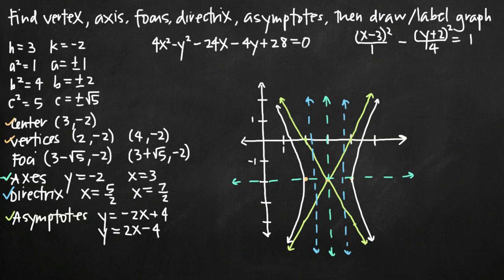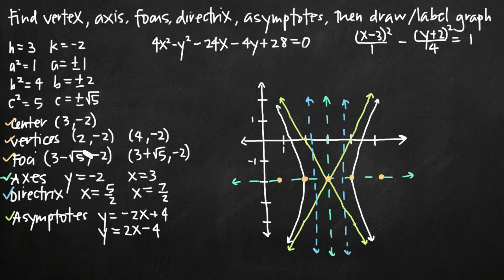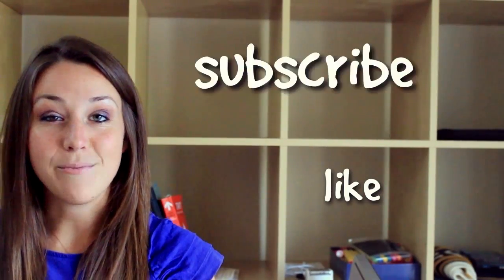We have the center, both vertices, and both foci — all along the major axis. We have the major axis, the minor axis, our two directrices, and our asymptotes. That's how you find all of these values for a shifted hyperbola that opens to the left and to the right. I hope you found that video helpful — like and subscribe to be notified of future videos.